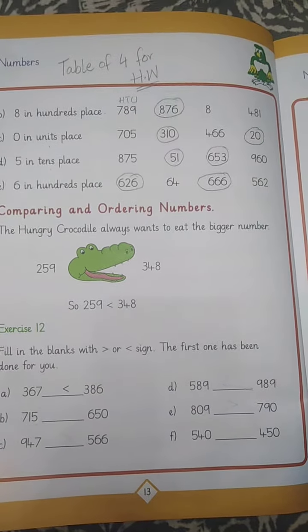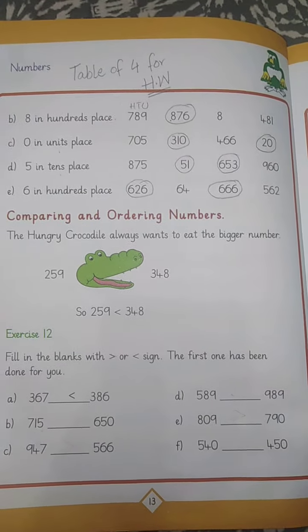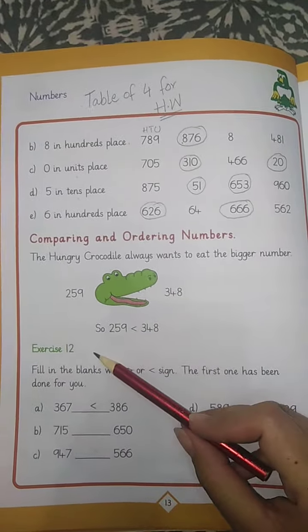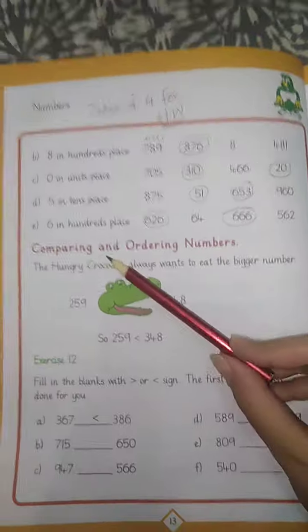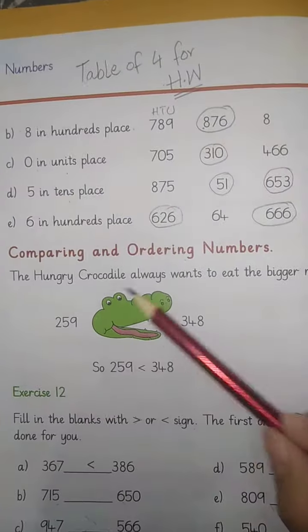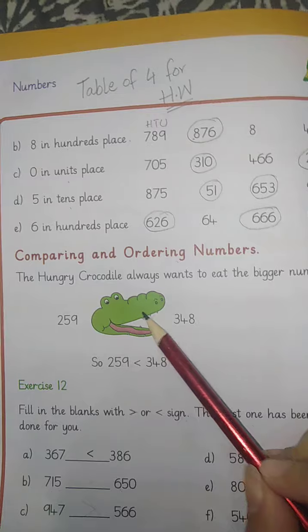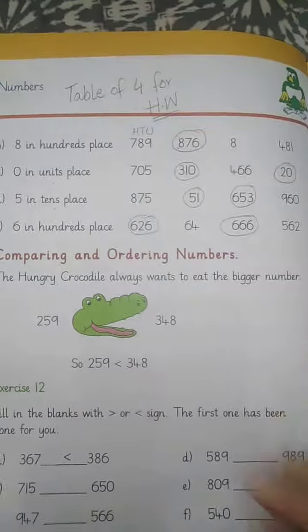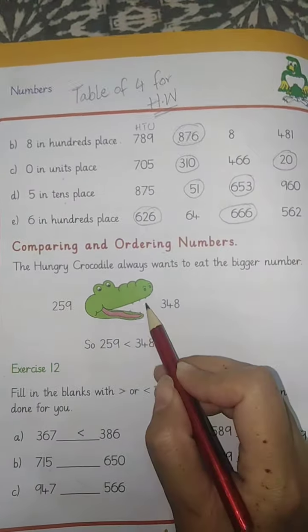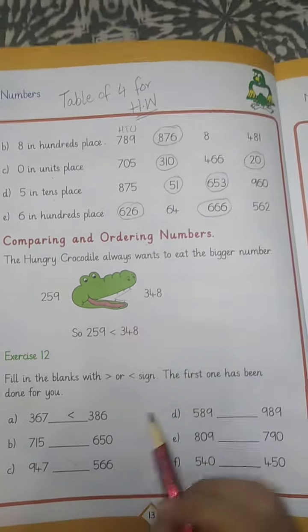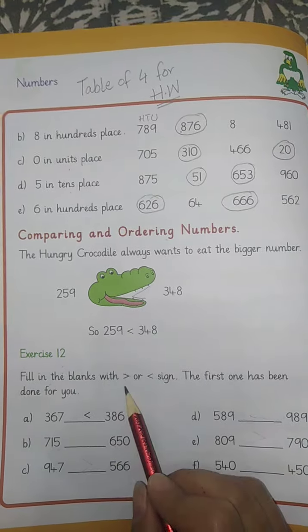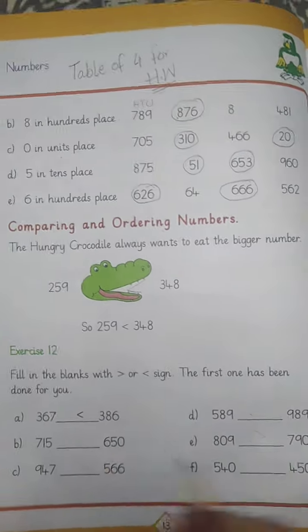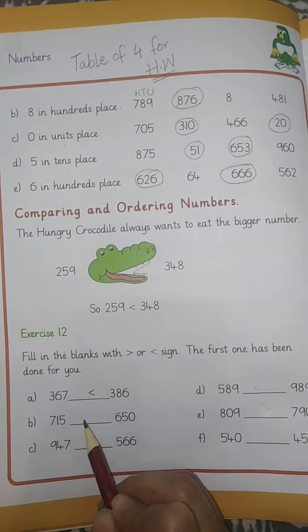Assalamu alaikum students, welcome to your math class. How are you all? Open your book to page number 13. Today we are going to solve exercise number 12, comparing and ordering numbers. The hungry crocodile always wants to eat the bigger number, so we will open the face on the bigger amount, on the side of the face.